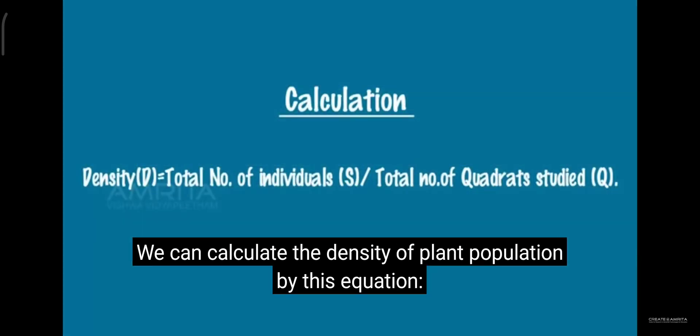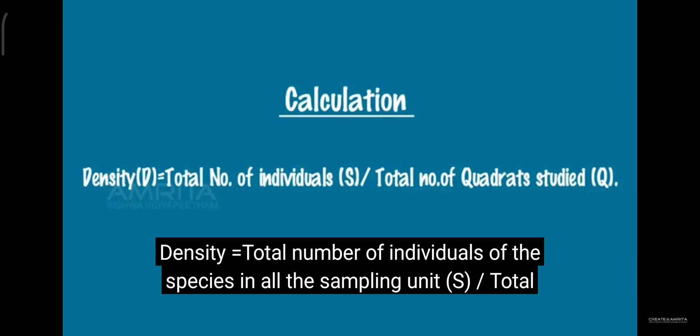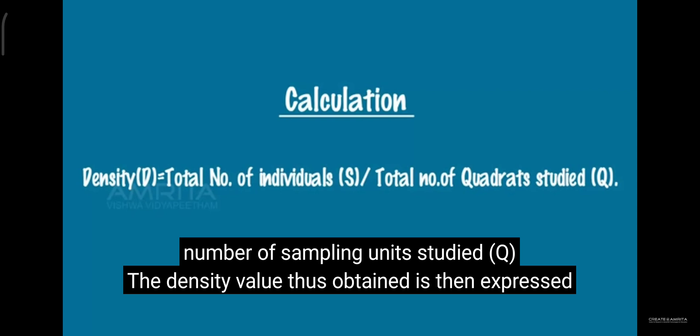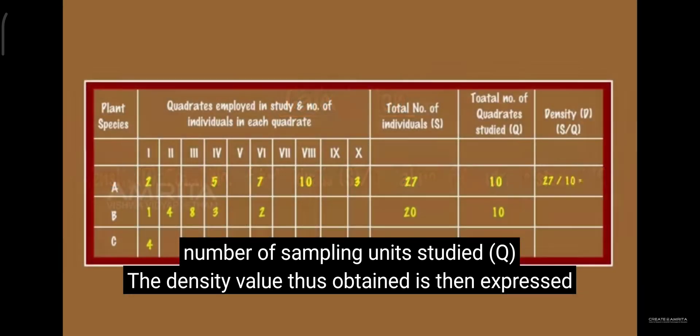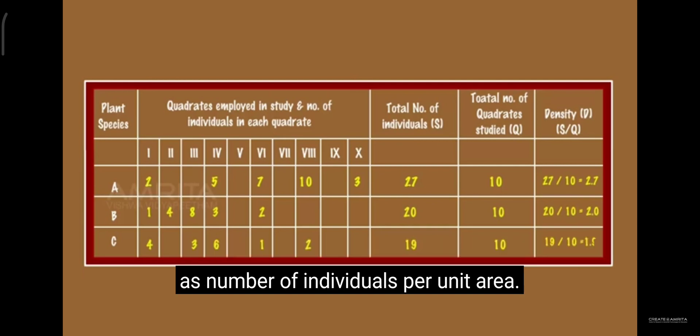We can calculate the density of plant population by this equation. Density is equal to total number of individuals of the species in all the sampling units divided by total number of sampling units studied. The density value thus obtained is then expressed as number of individuals per unit area.